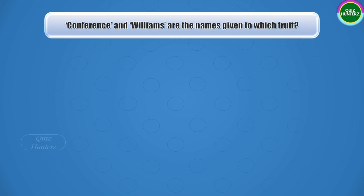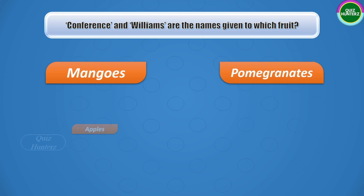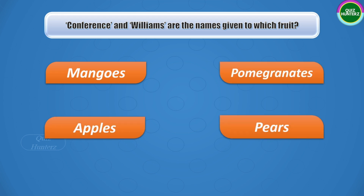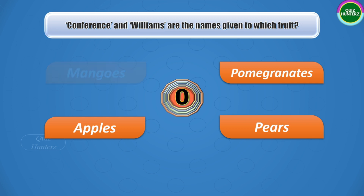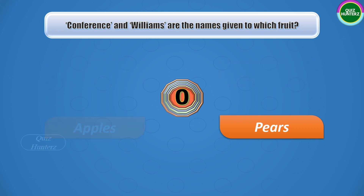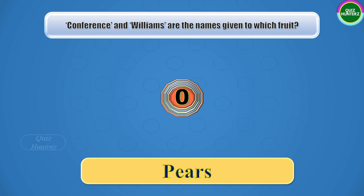Next question: Conference and Williams are the names given to which fruit? Your options are mangoes, pomegranates, apples, or pears. Your time starts now. And the correct answer is pears.